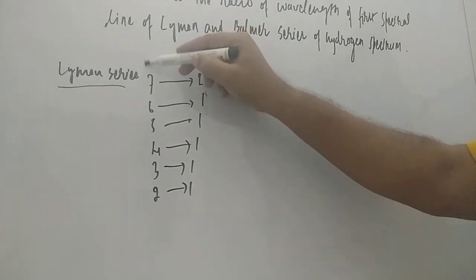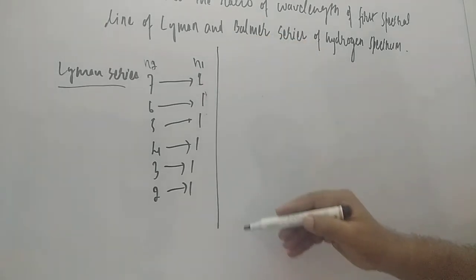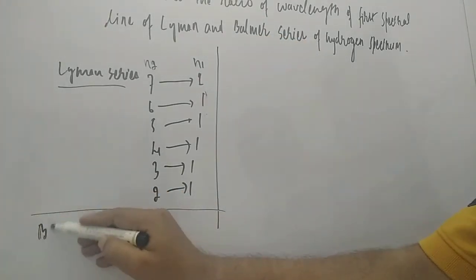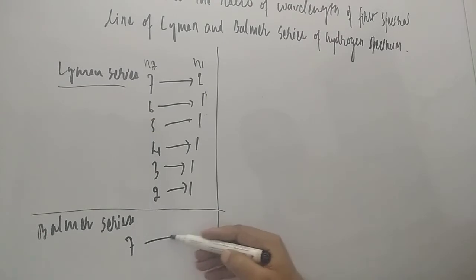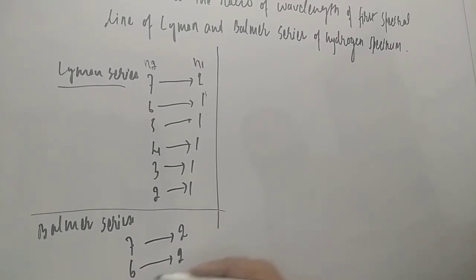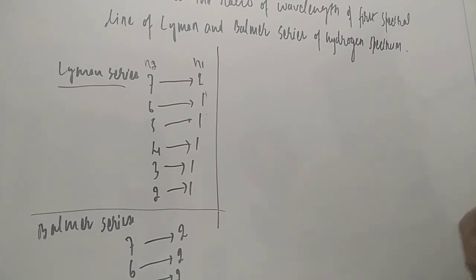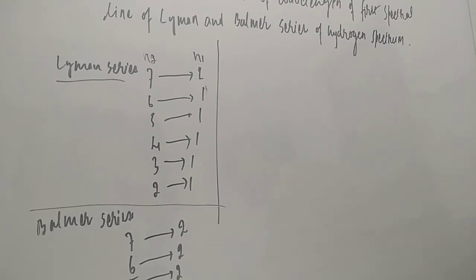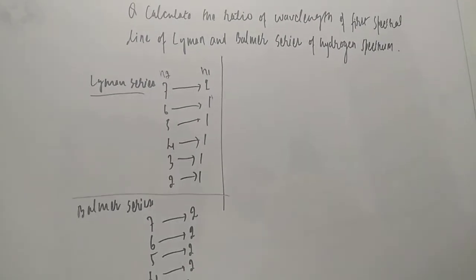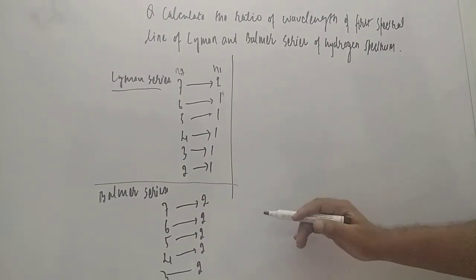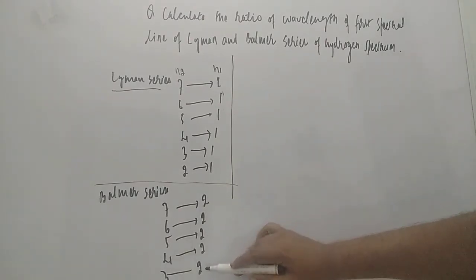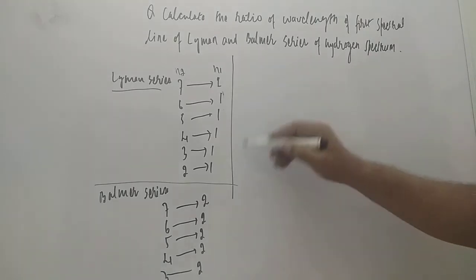Here n2 is the higher level and n1 is the lower level. For the Balmer series, the electron falls to energy level 2 — from 7 to 2, 6 to 2, 5 to 2, 4 to 2, or 3 to 2. These are the possible radiations coming out, as you can see on the board.